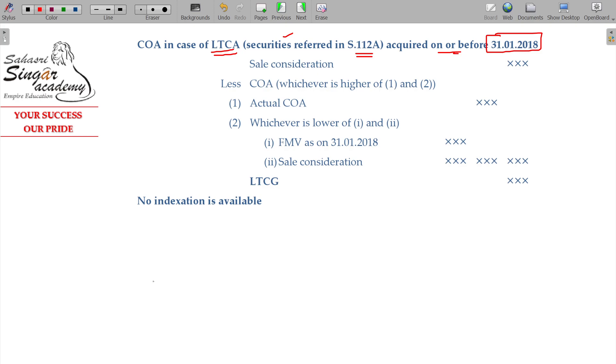The calculation will be this one: sale consideration less cost of acquisition. For this point, this model will be whichever is higher of 1 and 2. 1 being actual cost of acquisition, 2, whichever is lower of 1 and 2.